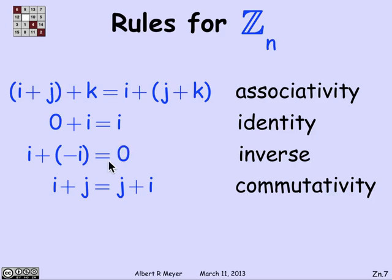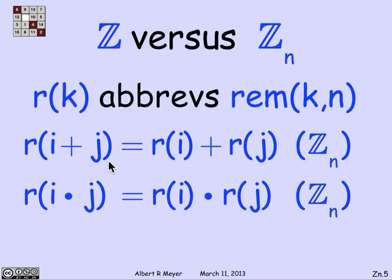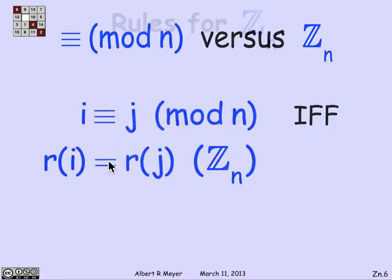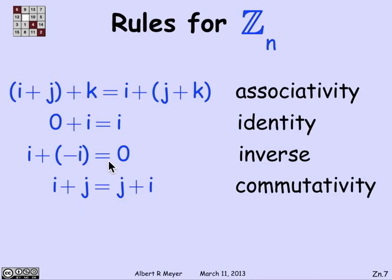We have a minus operation, an inverse operation with respect to addition, which is that for every i, there's an element called minus i, its additive inverse, such that if you add i and minus i, you get 0. And finally, commutativity, which is that i plus j is the same as j plus i.